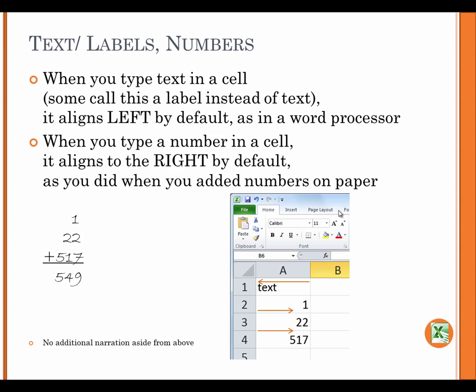Text Labels Numbers. When you type text in a cell, some call this a label instead of text. It aligns left by default, as in a word processor. When you type a number in a cell, it aligns to the right by default, as you did when you added numbers on paper.